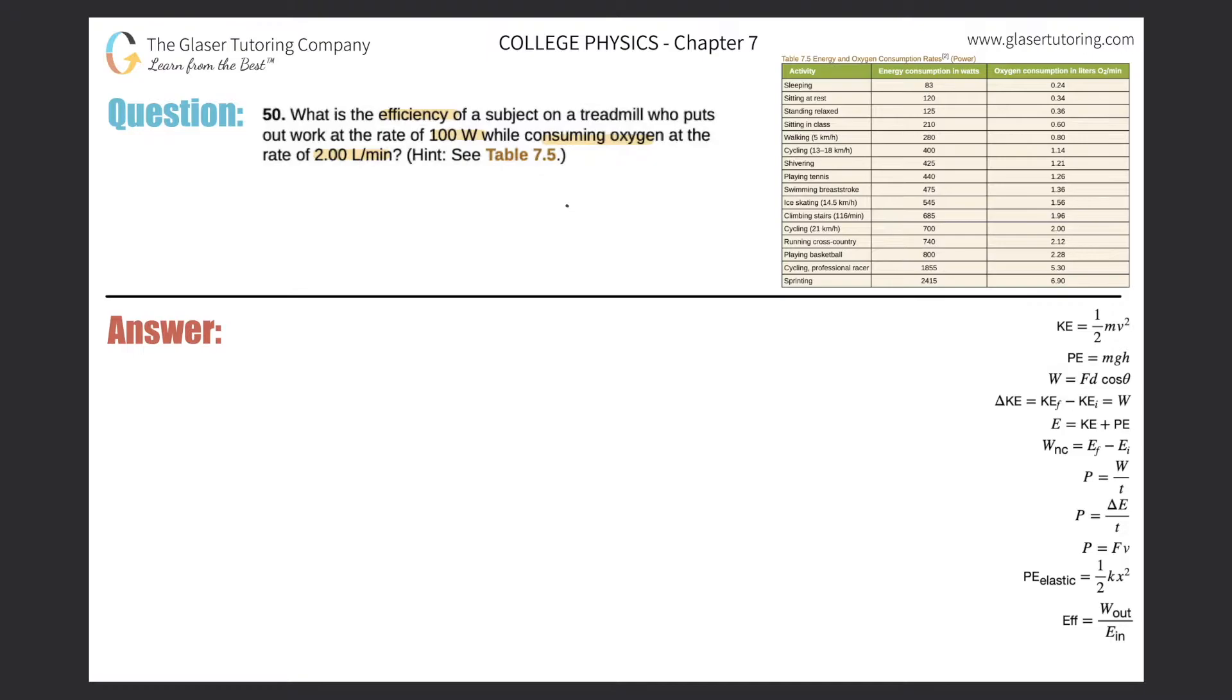So efficiency is all about work out divided by work in. Let's write that down. Efficiency is about work being produced out, useful work being produced out, divided by the energy in to a certain process.